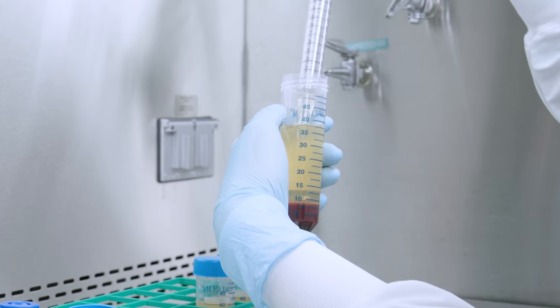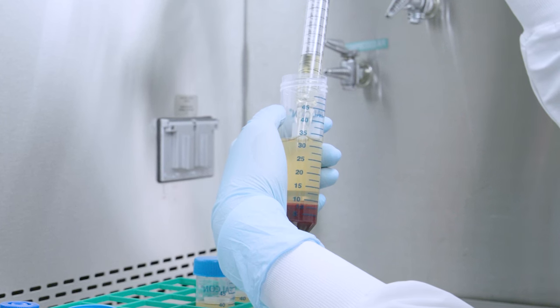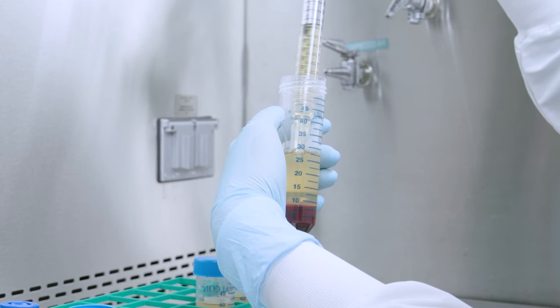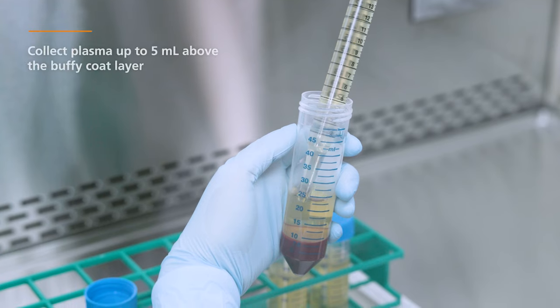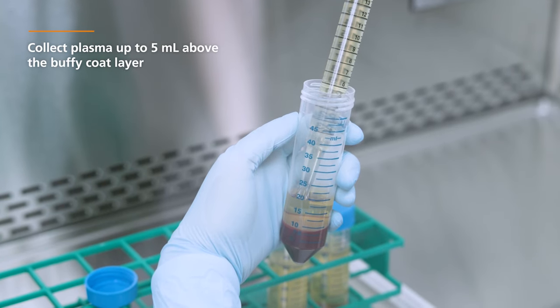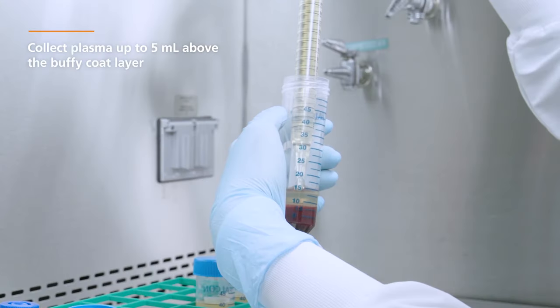After centrifugation, carefully remove some of the plasma layer. Here, you can use a 25 mL serological pipette to collect plasma up to 5 mL above the Buffy Coat layer.